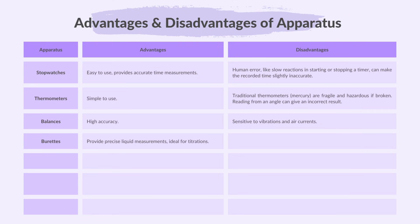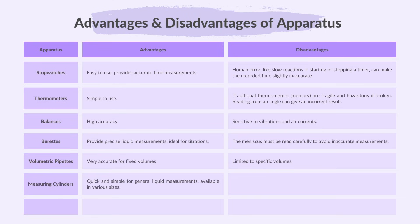Burettes provide precise liquid measurements ideal for titrations, but the meniscus must be read carefully to avoid inaccurate measurements. Volumetric pipettes are very accurate for fixed volumes, but they are limited to specific volumes, e.g. 25 ml or 50 ml. Measuring cylinders are quick and simple for general liquid measurements and are available in various sizes, but they are less precise than pipettes or burettes. Gas syringes measure gas volumes accurately, but they are fragile and can leak if not handled properly.